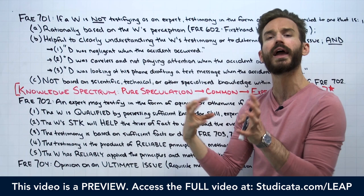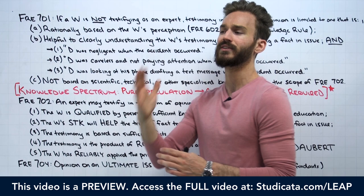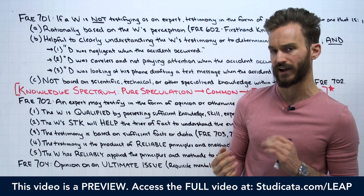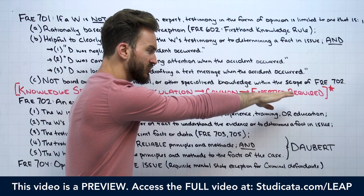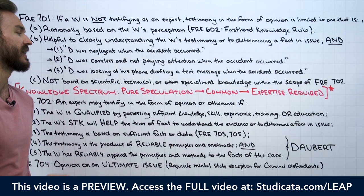Our gateway issue: the first thing we have to do on an opinion testimony analysis is categorize the testimony as either expert or non-expert testimony. Anytime you see an opinion, you want to place that opinion testimony in the proper position on the knowledge spectrum.